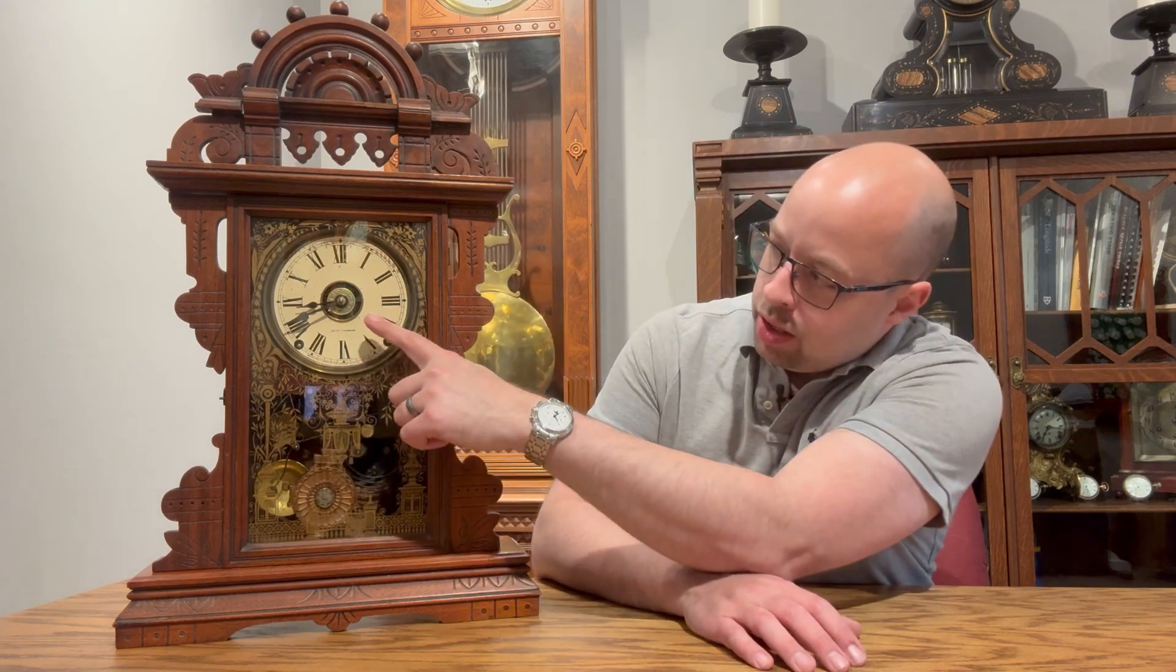We went through a lot of the function of the clock, how to put it in beat, those kinds of things. But I neglected one feature that a lot of people have had questions about. That is this ring right here and this mechanism right here. This is the alarm function and it doesn't really work the way that you probably expect it to. So let's get into it and figure out what's going on.